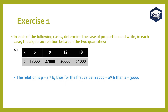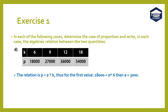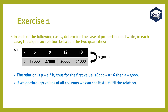The relation is p equals a times k. Thus for the first value, 18,000 equals a times 6, then a equals 3,000. If we go through the values of all columns, we can see they still fulfill the relation. Thus this table represents a proportion.